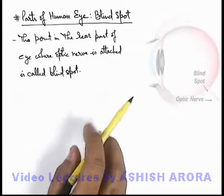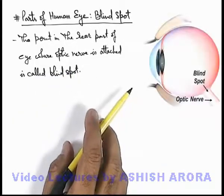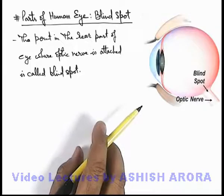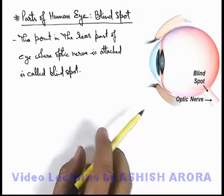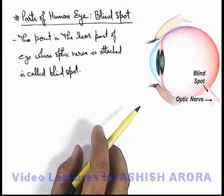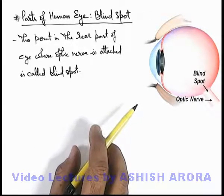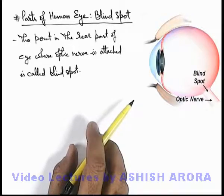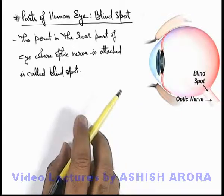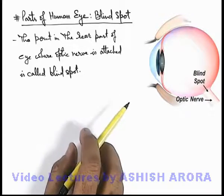In a picture of the human eye you can see this is the blind spot, where the optic nerve is attached to the eye, which carries the signals from the retina to the brain.